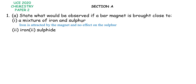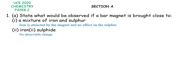Roman 2: iron(II) sulfide. What happens if we bring the same bar magnet to iron(II) sulfide? When we heat a mixture of iron and sulfur to form iron(II) sulfide, we see that it is actually a black solid and it's a compound. That means we shall not be able to separate the iron from the sulfur because it's no longer a mixture. So if we bring a bar magnet, we are likely to see no observable change.